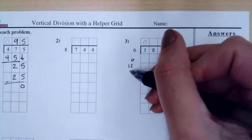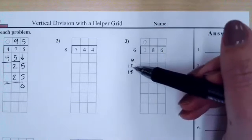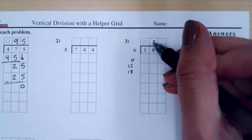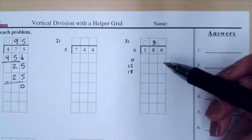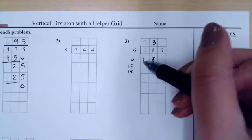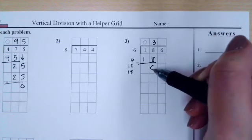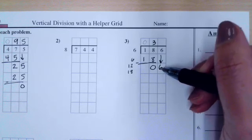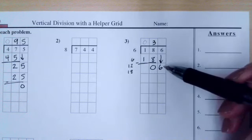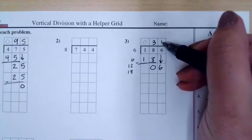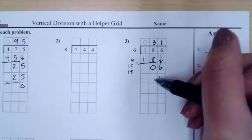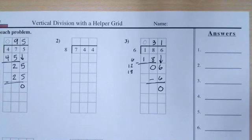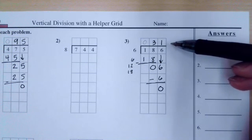Six, twelve, eighteen — six times one is six, six times two is twelve, six times three is eighteen. I can make exactly three groups, so I put three up here. We used all of them, so I put zero here. Now we go next door to our ones and bring down the six. How many groups of six can I make if I have six? Exactly one group, nothing left over, no remainder. Our answer is 31.